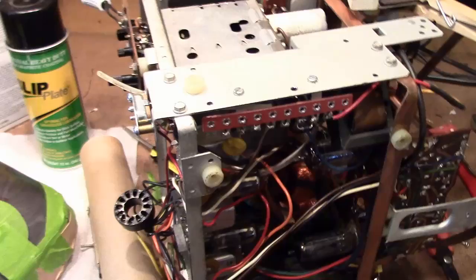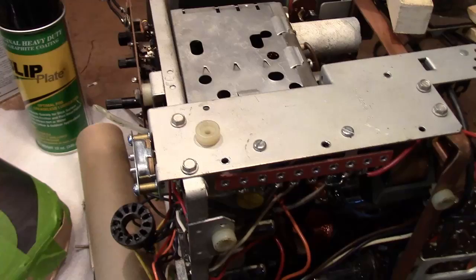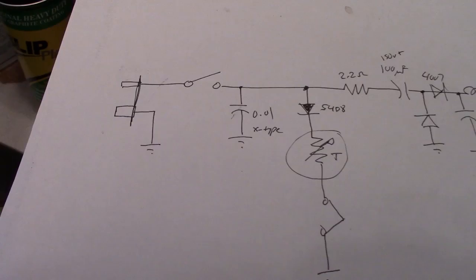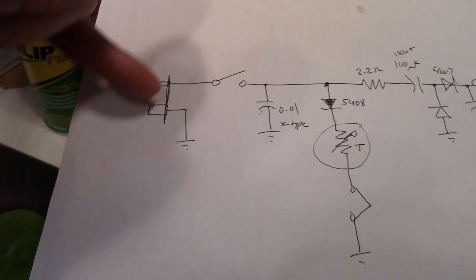In the original, they have the switch going to the chassis. Here's a little simplified diagram I made. In the original, the switch was actually over here. I want to put it on the hot side, and the original was not polarized.